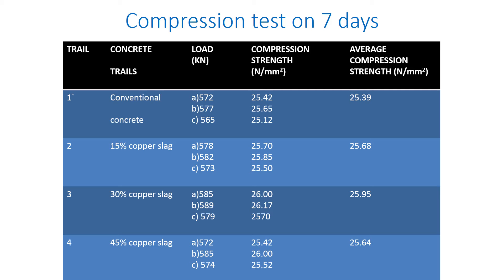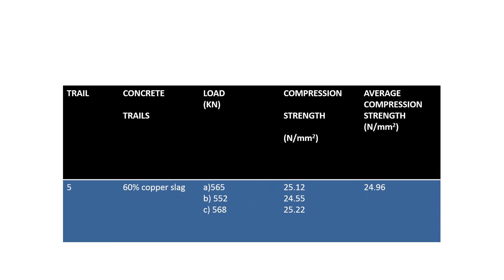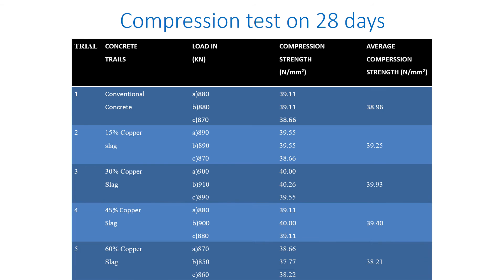Conventional concrete result is 25.39. With 15% copper slag as fine aggregate replacement, the result is 25.68. At 30% the result is 25.95. At 45% the result is 25.64. We can see that at 45%, the compressive strength is reduced, so 30% is the optimum. On 28 days we have achieved the target strength of 38.96.